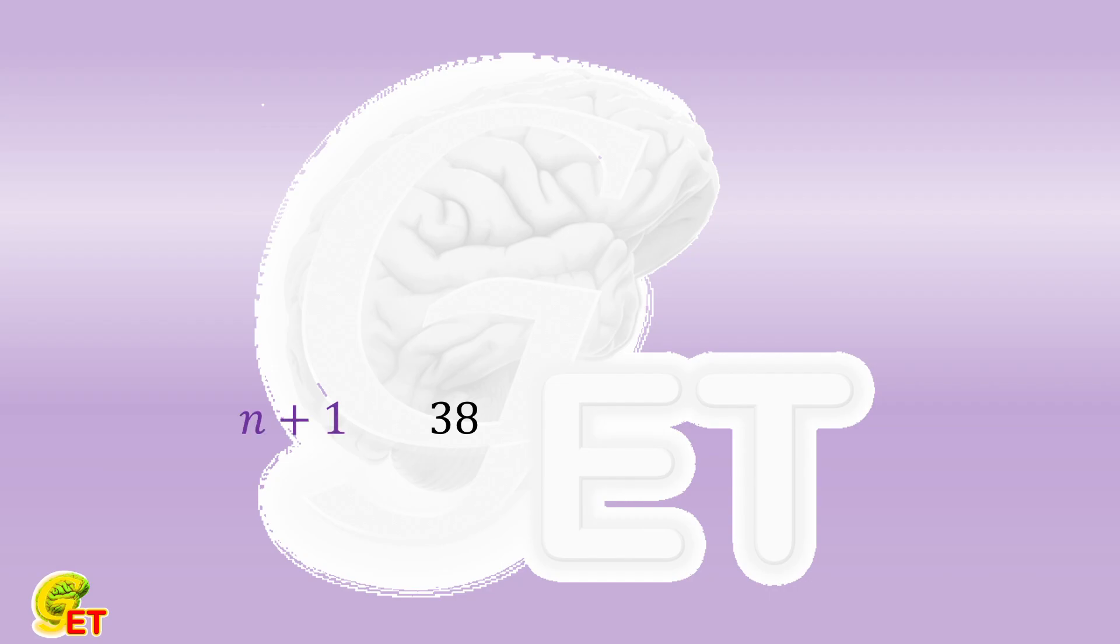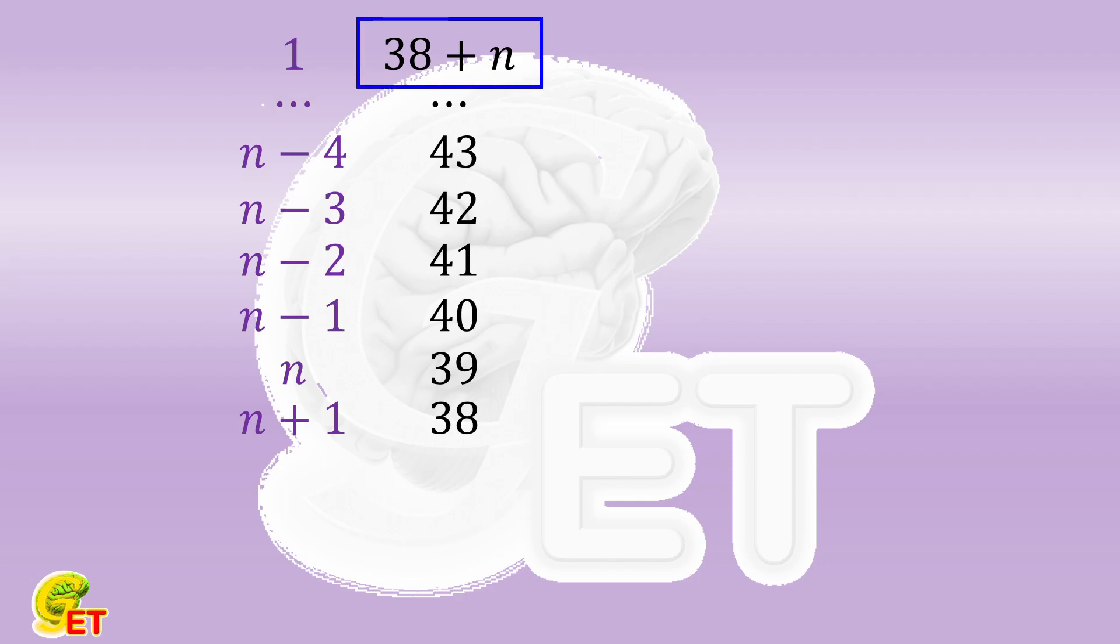We expect that the championship team has the points as few as possible. So the ideal case is, for each team which ranks one position higher, they have only one point higher. Then the championship team therefore has 38 plus n points. And we expect that this n is as small as possible.